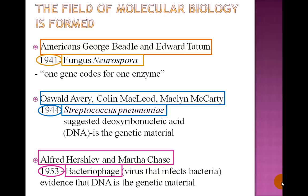In 1944, Oswald Avery, Colin McLeod, and McCarty used the bacteria Streptococcus pneumoniae to suggest that deoxyribonucleic acid, or DNA, is the genetic material in cells. Then in 1953, American biochemist Alfred Hershey and geneticist Martha Chase used a virus that infects bacteria — known as a bacteriophage — to provide irrefutable evidence that DNA is in fact the genetic material.